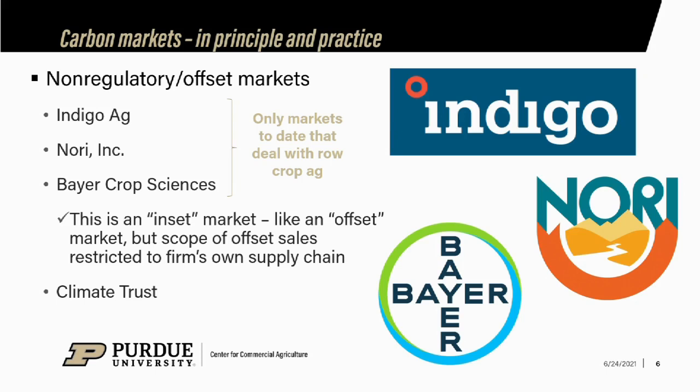Bayer Crop Science is starting their own carbon inset market, which is distinct from an offset market in that it's basically an offset market within a company's own supply chain. Rather than buying offsets from some farm wherever, they're going to go to farmers and retailers in their own supply chain and pay them to abate their carbon. These inset markets try to get around the ethics critique — making sure companies take responsibility over their own supply chain's carbon footprint, not just paying somebody else.